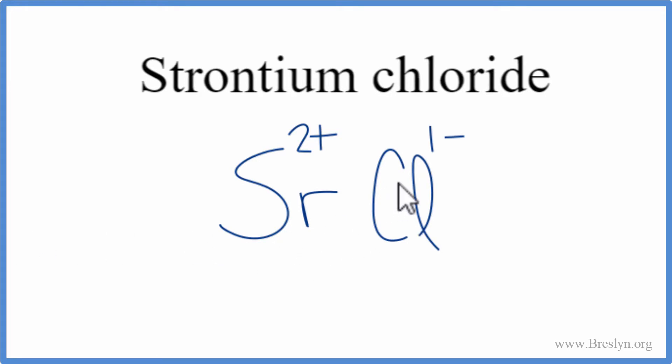We use something called the crisscross method. We'll move the 1 here and the 2 here. We don't write the 1 by convention, we can get rid of this, and that's the formula for strontium chloride, SrCl2.